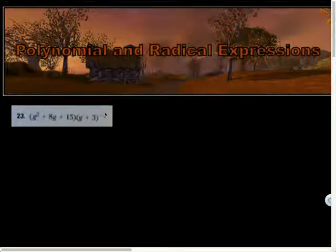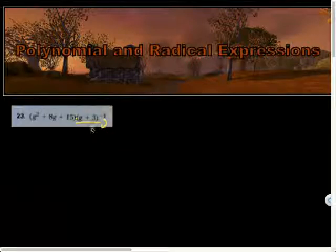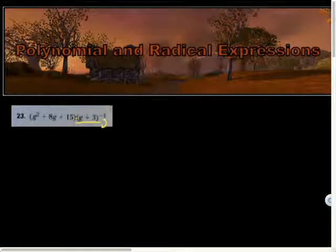Here's problem 23 and you might be like yo where's the division. We're multiplying by this binomial to the negative first power. What's that tell me to do? That tells me to move it downstairs, so I'm technically dividing by g plus 3 instead of multiplying by it.